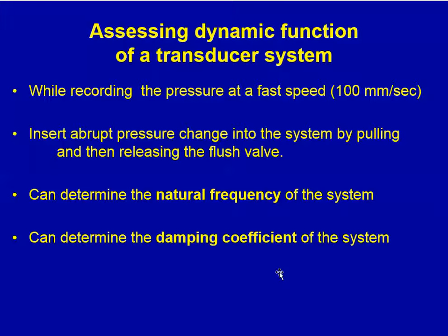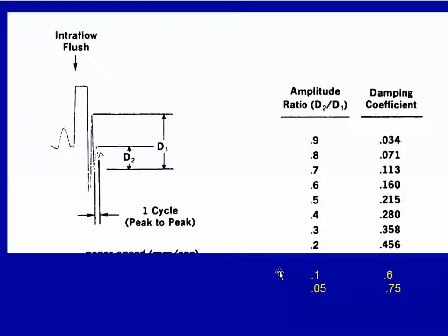The dynamic function of a transducer can be assessed — this is discussed in Miller's textbook. Basically, while recording the arterial trace, you insert an abrupt pressure change into the system by pulling and then releasing the flush valve. This results in a bouncing trace from which you can determine both the natural frequency and the damping coefficient.